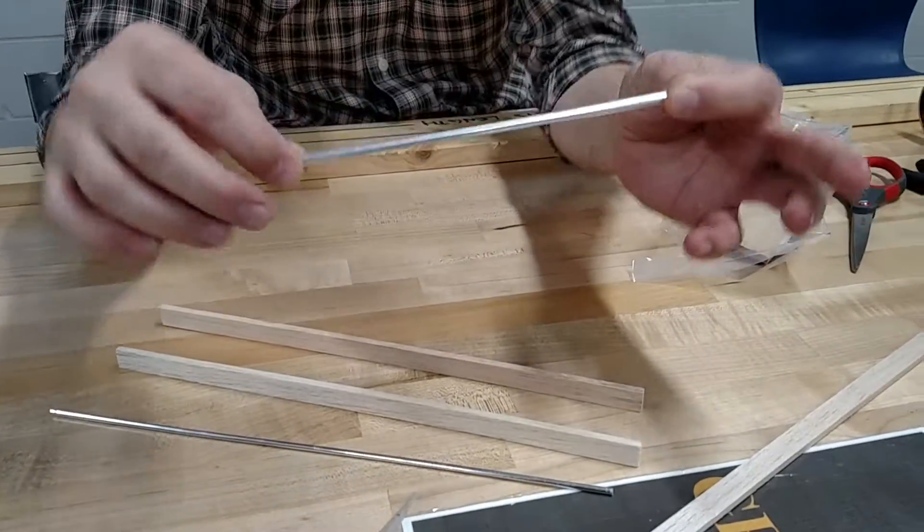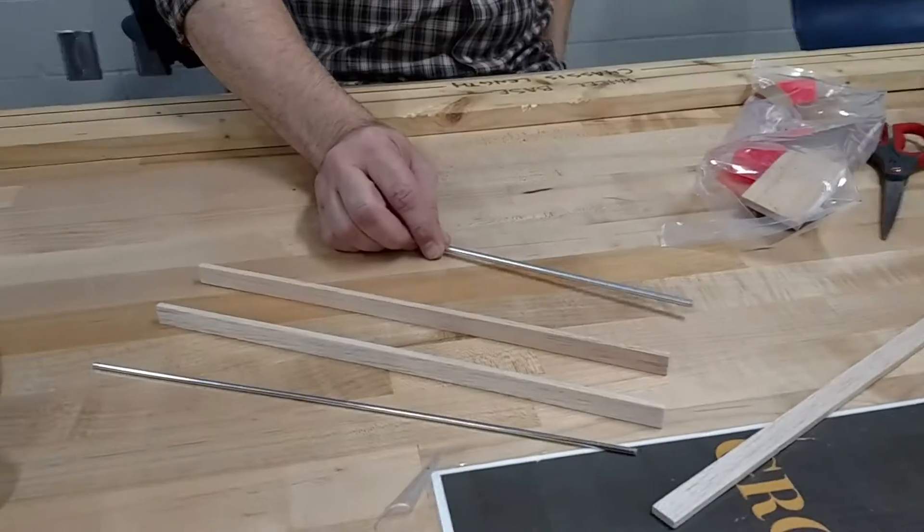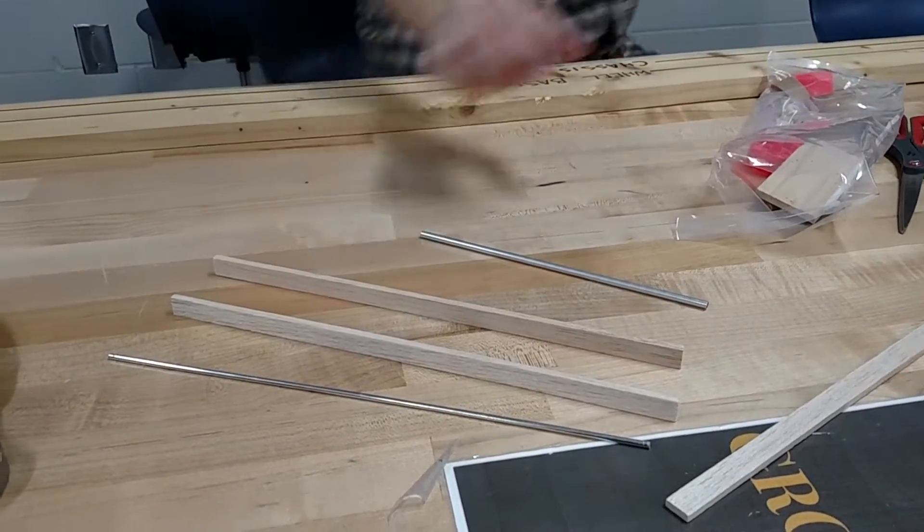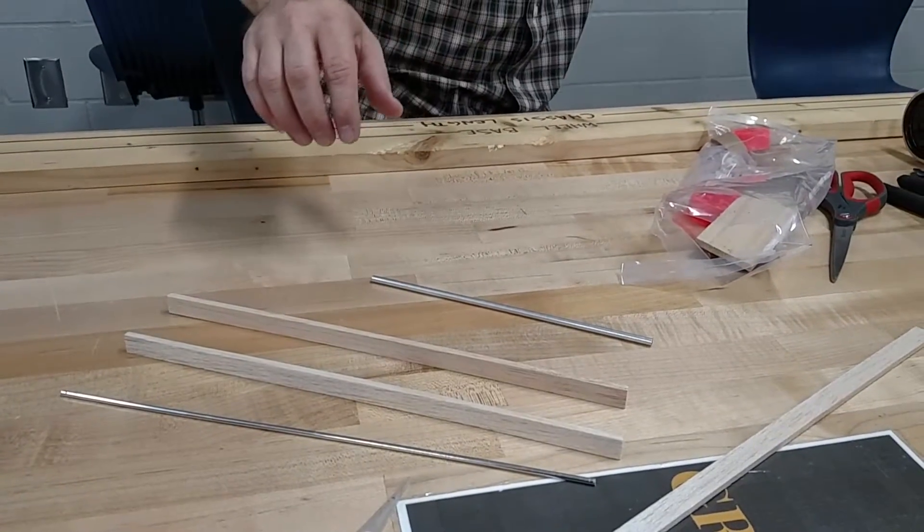Also, you will use a pipe cutter to cut this. Can you get a pipe cutter over there? I can just show. It's in one of the boxes there. It looked like a torn machine at first.